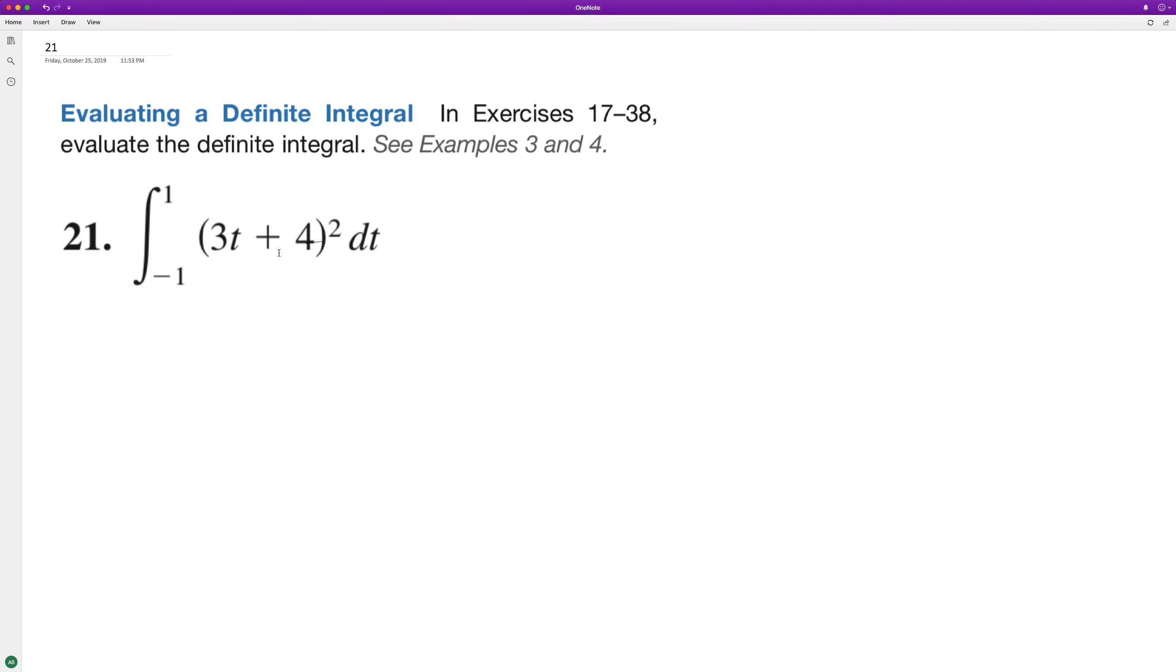So we multiply the binomial by itself. We get 9t squared plus, it ends up being 24t, plus 16.